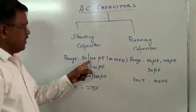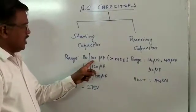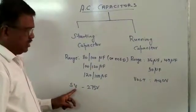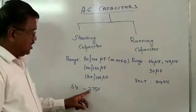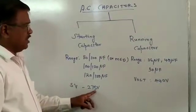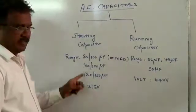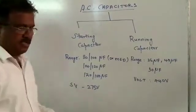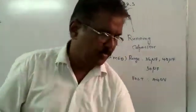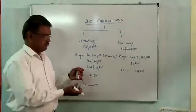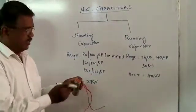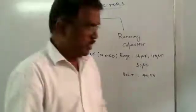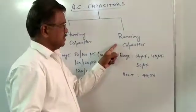This is a double value — a low value and a high value, giving two readings for capacitors. This is the surge voltage. So this is 275 volts. This is a starting capacitor. This is a standard capacitor.